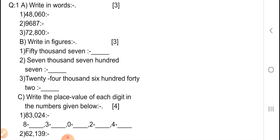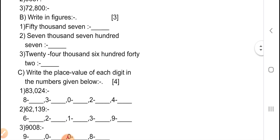Now B — write in figures, you have to write down in figures, marks is 3. Number 1: 50,007. Number 2: 7,707. Third one: 24,642.